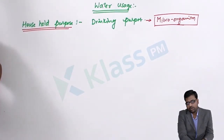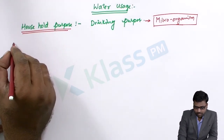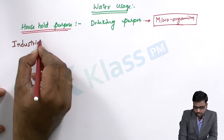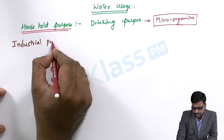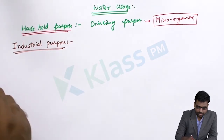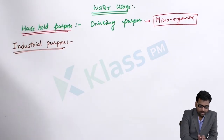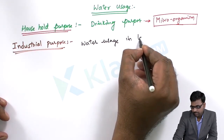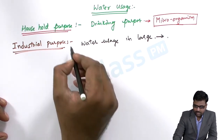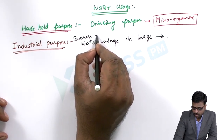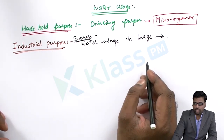The next purpose of water is industrial use. As engineers, we should know what type of water is used in various types of industries. Most beverage companies have large water usage, and for beverage companies, the water should not contain microorganisms or should be free of them.